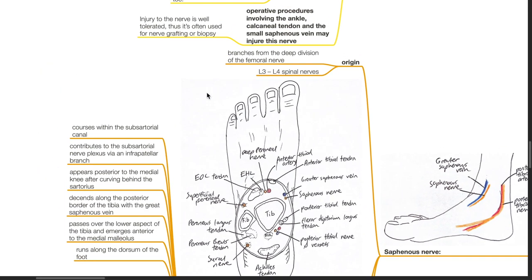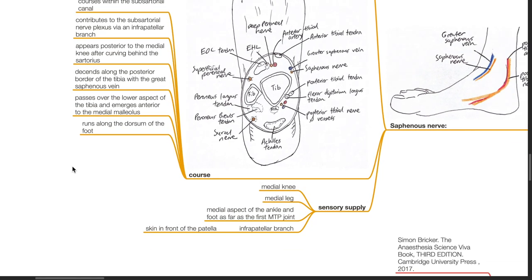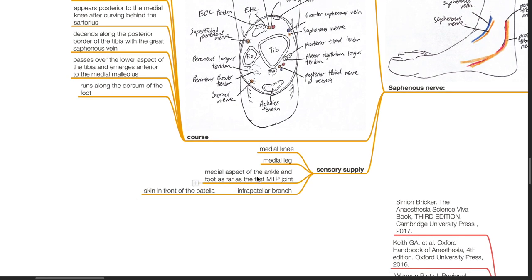Saphenous nerve. Origin: It branches from the deep division of the femoral nerve, originating from the L3-L4 spinal nerves. Course: It courses within the subsartorial canal and contributes to the subsartorial nerve plexus via an infrapatellar branch. It appears posterior to the medial knee after curving behind the sartorius, then descends along the posterior border of the tibia with the great saphenous vein. It passes over the lower aspect of the tibia, emerges anterior to the medial malleolus, and runs along the dorsum of the foot. Sensory supply: medial knee, medial leg, medial aspect of the ankle and foot as far as the first MTP joint. The infrapatellar branch supplies the skin in front of the patella.